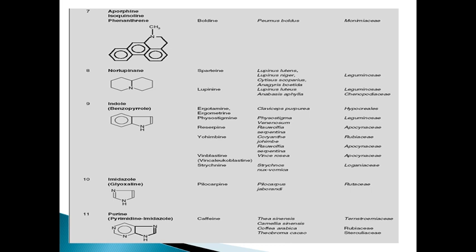The ninth class is indole alkaloids. Ergot is the drug which contains alkaloids such as ergotamine, ergometrine, and physostigmine — all of which belong to the indole alkaloid class. Claviceps purpurea is the botanical origin of ergot and Hypocreaceae is the family.